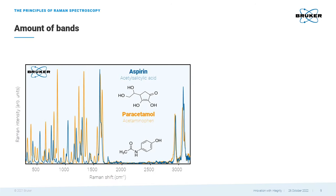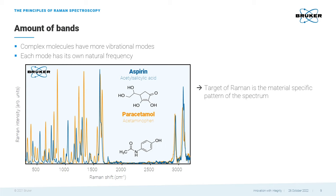When looking at Raman spectra of more complex substances like aspirin and paracetamol, we see several so-called bands. This is because these molecules have more vibrational modes than simple molecules. Each of these modes has its own natural frequency. The target of a Raman analysis is the measured material-specific pattern of the spectrum — the so-called Raman fingerprint.